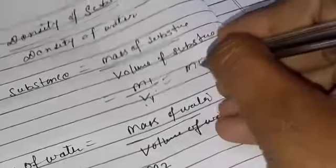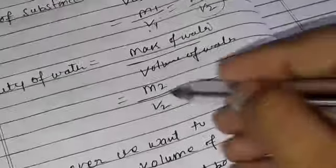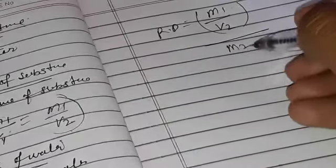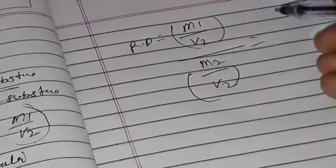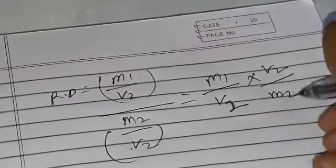Since v1 equals v2, we can substitute v2 in place of v1. So the formula becomes: relative density equals m1 upon v2, divided by m2 upon v2. The v2 terms cancel, giving us relative density equals m1 upon m2.